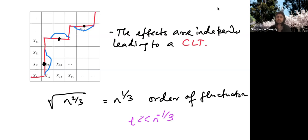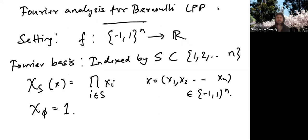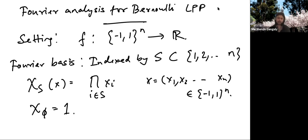Now let's make this slightly more formal. We'll actually borrow some of the Fourier analysis that went into understanding critical percolation. The proof for Brownian LPP also uses Fourier analysis but in Gaussian space; it's slightly cleaner to describe things in the Boolean setting, which is what I'll do.